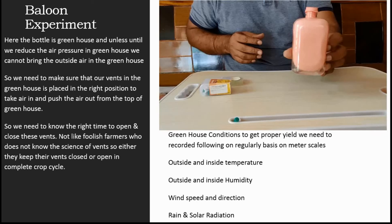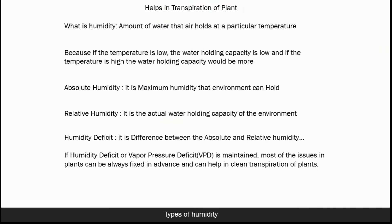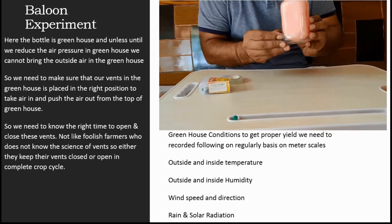The air is blown into the balloon; the balloon then removes the air from the bottle and takes its place. This is what happens in the polyhouse — air comes in and the air goes out from the top vent. We need to make sure the vents are placed in the right position to take air in and push air out from the top of the greenhouse.